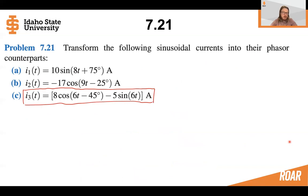Now, what about part c where we have current three? So let's break this into two parts and let's convert part one and part two into the phasor domain. So part one is relatively easy. We can easily see that that converts to 8e to the minus j 45 degrees.